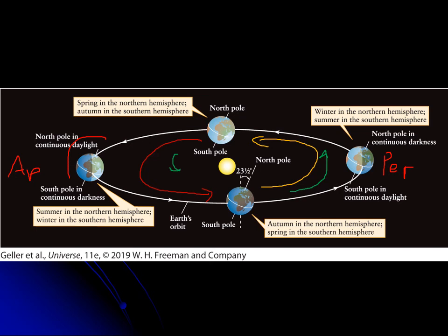That's because we're going slower in that part of the orbit than when we're close to the sun. So it's not entirely your imagination — the summer really is longer. And that's true for all orbits: they speed up and slow down as they go around.